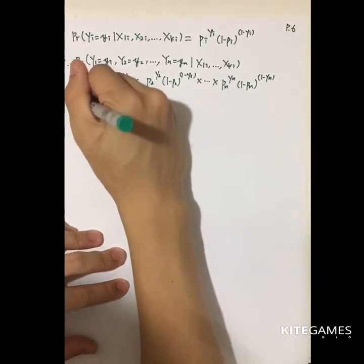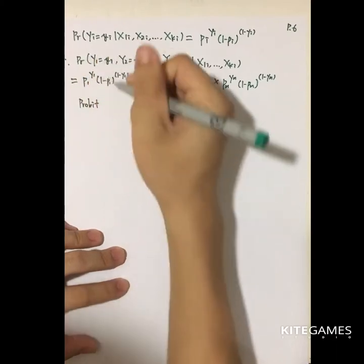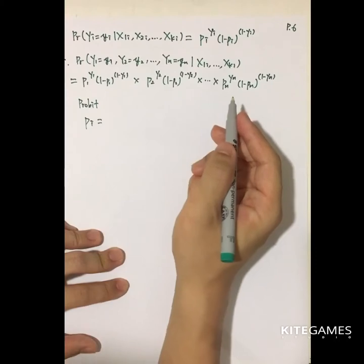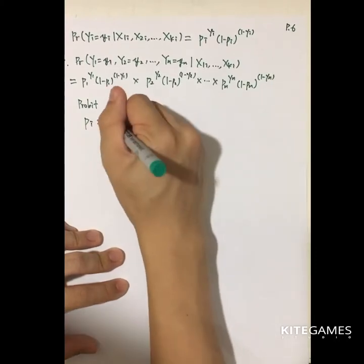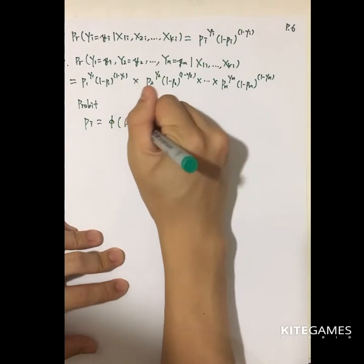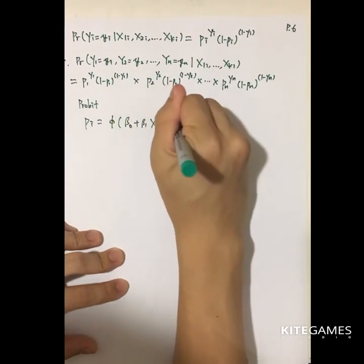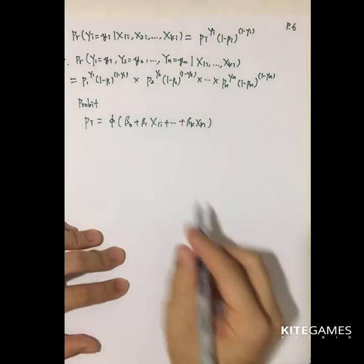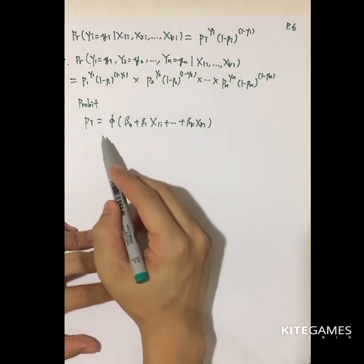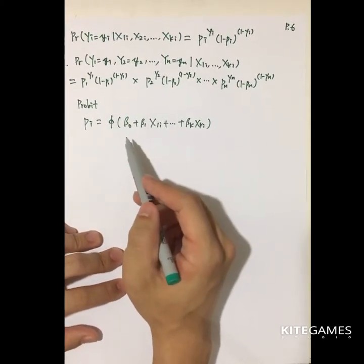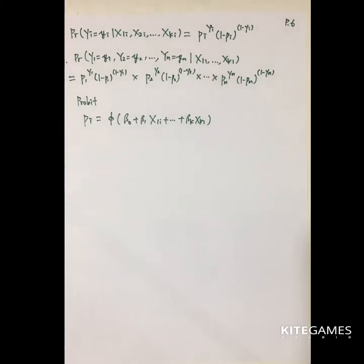In the probit model, you replace each pi — p1, p2, ..., pn — with the cumulative density function (CDF), which is Φ(β0 + β1x1i + ... + βkxki). You replace all p's with this CDF, then maximize it to find the estimates.